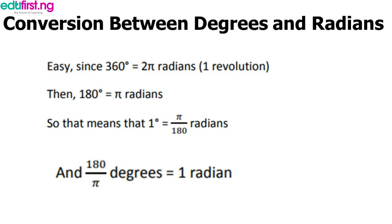For conversion between degrees and radians: pi in radians equals 180 degrees. One degree equals pi over 180 in radians, and one radian equals 180 over pi in degrees.